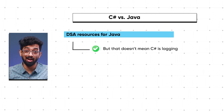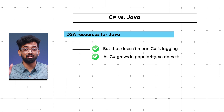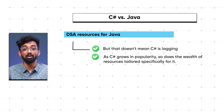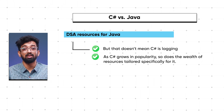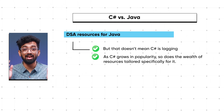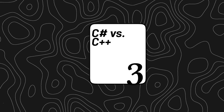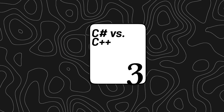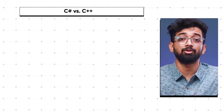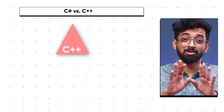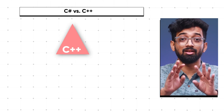However, you might find more DSA resources for Java out there, but that doesn't mean C# is lagging. As C# grows in popularity, so does the wealth of resources tailored specifically for it.